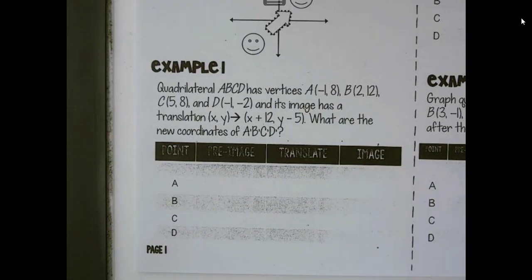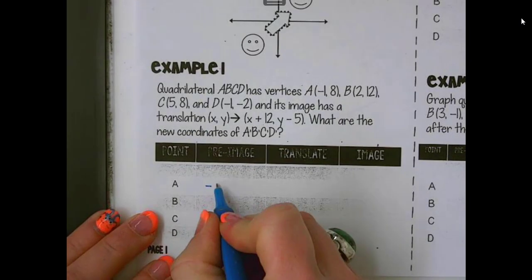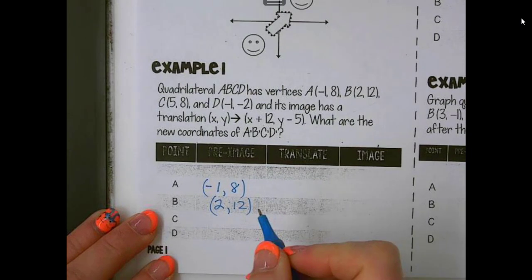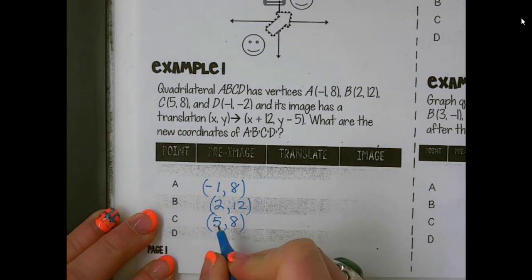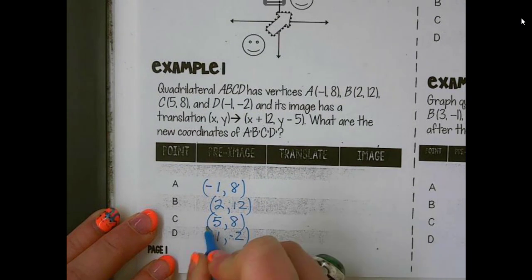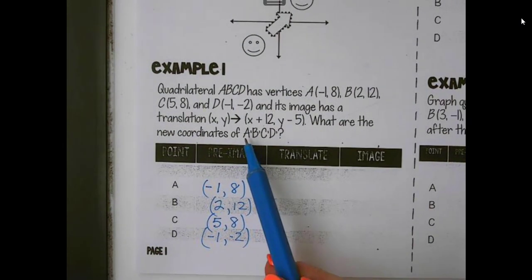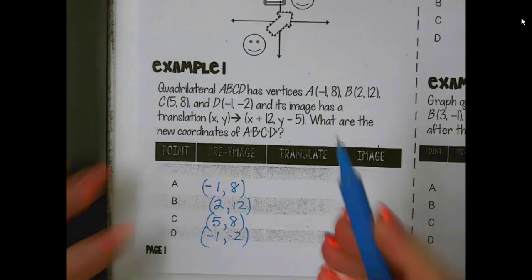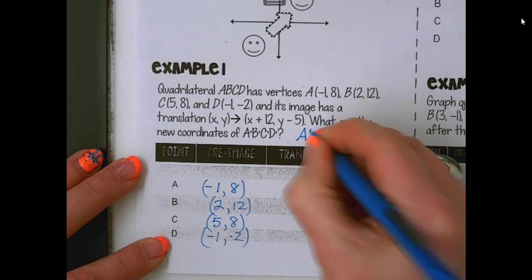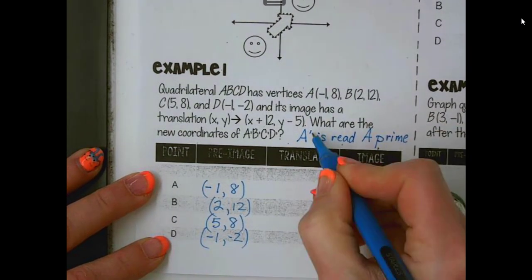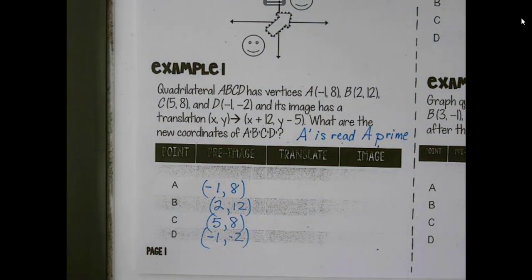So let's take a look at some examples here. Quadrilateral ABCD has vertices, and so we're going to go ahead and fill in our chart here. So I'm going to use blue. Now, this would be called the pre-image. So you can fill in your chart. These are the actual ordered pairs for each of the vertices. And we are going to try to get the new coordinates. And this is read as A prime, B prime, C prime, D prime. So I'm just going to make a note here for you. A' is read A prime. So that little tick there just means prime. And so that's going to be our new image.